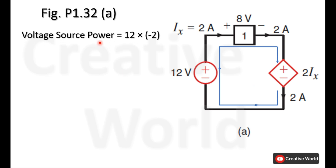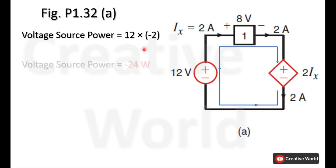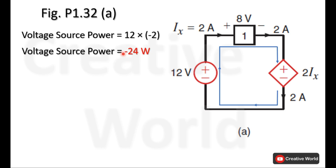The voltage source power can be calculated using the voltage across it and the current through it. The current through the circuit is 2 amperes, and in the case of this voltage source, the current is entering from the negative terminal and leaving from the positive terminal, so this current will be taken with a minus sign. The power of the voltage source will be minus 24 watts, and this power is being supplied by the voltage source because of this minus sign.